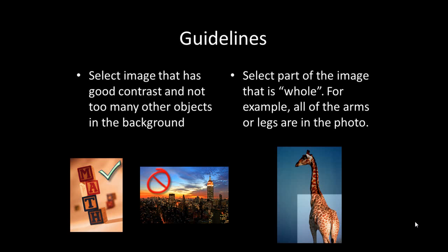There are some guidelines to keep in mind. When you want to do this on an image, the first thing is to select an image that has good contrast, like the math blocks here, and there aren't too many objects in the background. The city has a lot of objects and different colors that blend into each other, making it more difficult to remove colors. The second thing: select the part of the image that is whole. You don't want to select the bottom part of the giraffe where the legs are cut off — that's not effective. It's better to select the part that is whole, like the head of this giraffe.